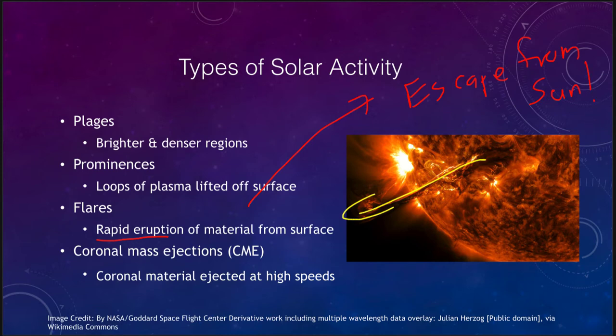Very intense flares can get material off the surface of the sun and get that material all the way to the Earth. We already have the solar wind which slowly moves material outward, but a solar flare represents a much more intense concentration of material, and therefore will produce much stronger effects like aurora or interference with our atmospheres here on Earth.